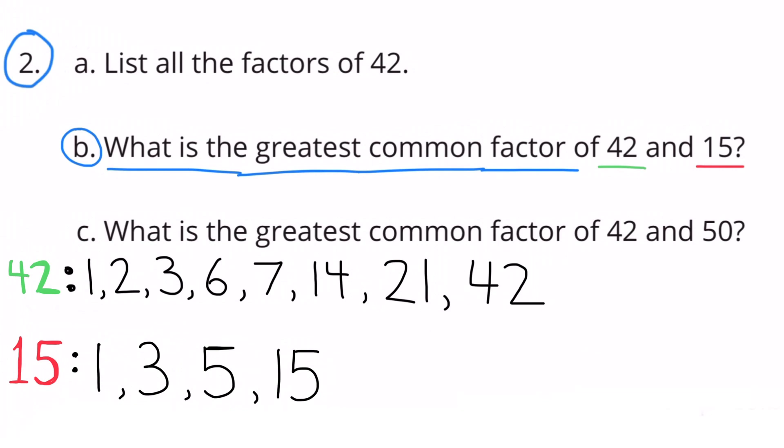The factors of 15 are 1, 3, 5, and 15. 1 times 15 equals 15, and 3 times 5 equals 15. These are the factors of 15. The greatest common factor of 42 and 15 is 3.